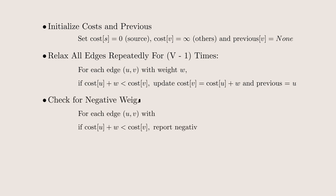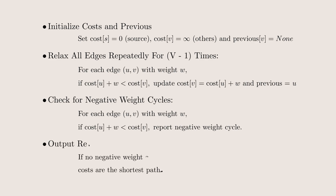Next, once we've finished the relaxation process, we perform it one more time. If the costs are still being updated, it means the graph contains negative weight cycles. In this case, the algorithm fails. The reason for this failure will be discussed later in the video. And lastly, if there is no negative weight cycle, we are left with the shortest path from the source to all other nodes.